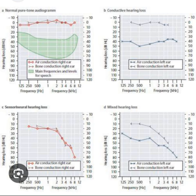Conversely, bilateral high-frequency SNHL in an older patient may suggest presbycusis, which would not require imaging but may warrant fitting for hearing aids. In this way, the audiogram allows clinicians to quantify and characterize the degree and type of hearing loss, providing more targeted care to improve patients' quality of life and occupational functioning.